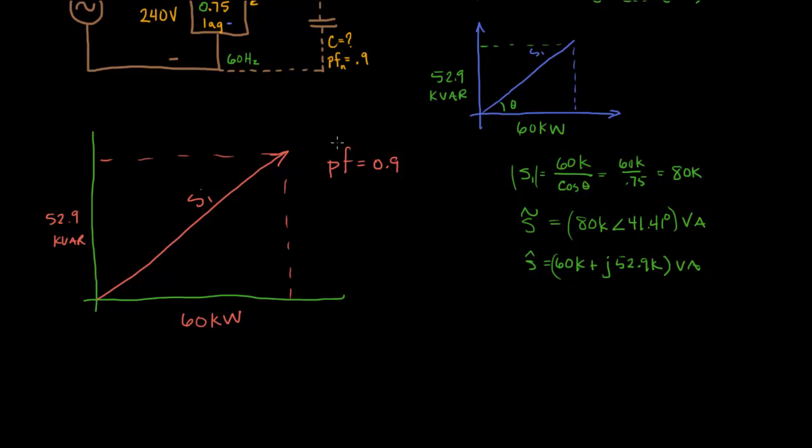And we'll draw it in. So the power factor will be... And that's lagging too, right? So theoretically you could ask for leading, I guess, but I don't know why you'd do that. The cosine of 0.9, the inverse cosine, will give us theta nu. And that angle is 25.84 degrees.